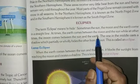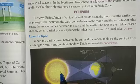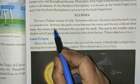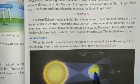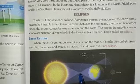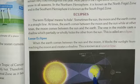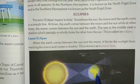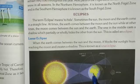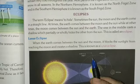Sometimes the sun, the moon, and the earth come in a straight line. As you can see in this picture, the sun, earth, and moon are all in the same straight line. At times, the earth comes between the moon and the sun, while at other times, the moon comes between the sun and the earth. The one in the middle casts a shadow which partially or wholly hides the other from the sun. This is called an eclipse.